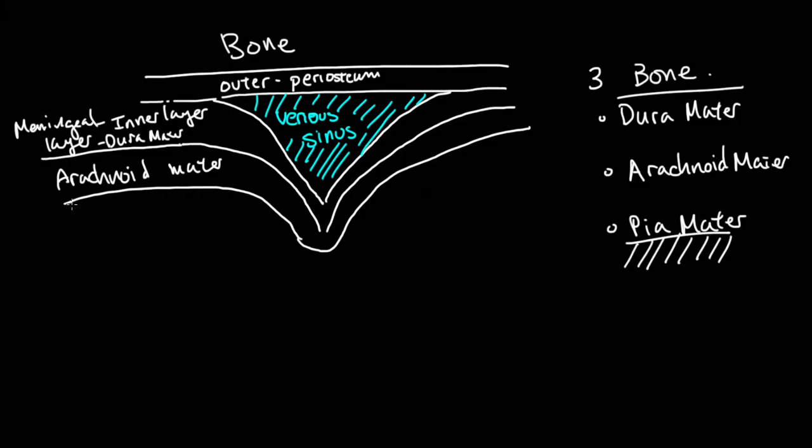And the thing you need to know probably about the arachnoid mater is more to do with what happens to it in relation to the layer underneath. So the layer underneath is the pia mater.